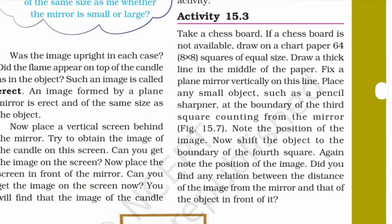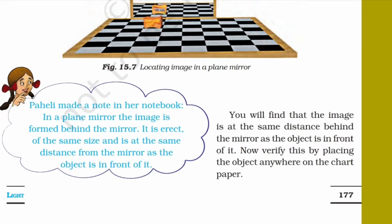What about the distance of the image from the mirror? We will test this. Take a chessboard — if one is not available, draw 64 squares (8x8) of equal size on chart paper. Draw a thick line in the middle. Fix a plain mirror vertically on this line. Place a small object such as a pencil sharpener at the boundary of the third square counting from the mirror.